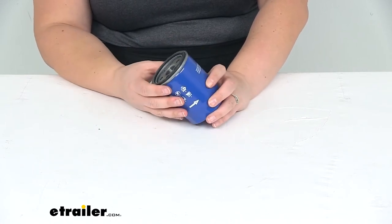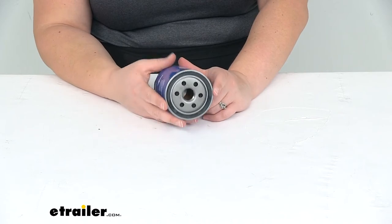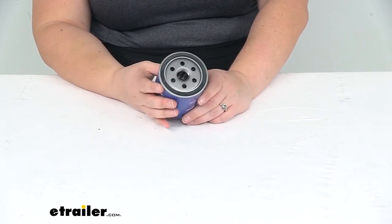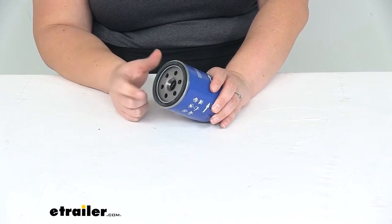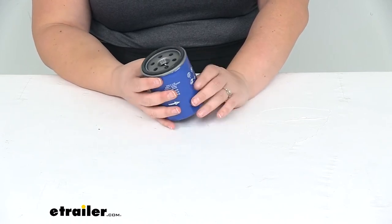So this is just going to install into your oil filter assembly on your engine block of your vehicle, and it's going to have an internally lubricated sealing gasket to make that filter easy to remove and replace.